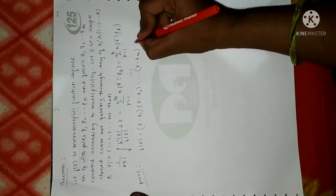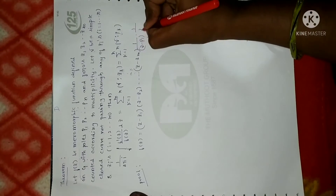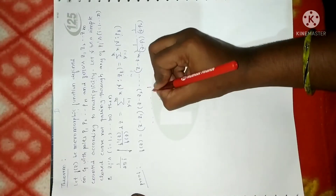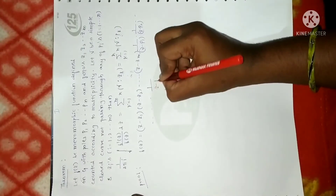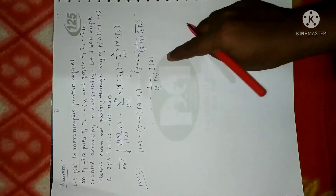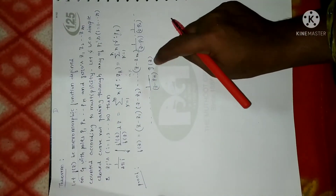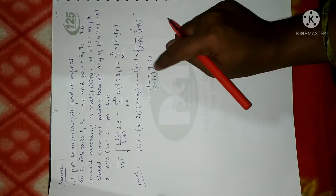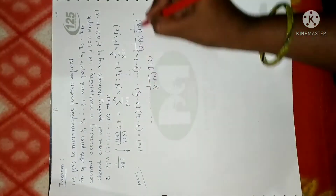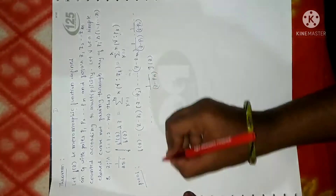As given in the definition of zeros of multiplicity m from the previous session, we can write f(z) as (z − z₁)(z − z₂)···(z − zₘ) × [1/(z − p₁)] × [1/(z − p₂)] ··· [1/(z − pₙ)] × g(z), combining both zeros and poles, where g(z) is analytic.